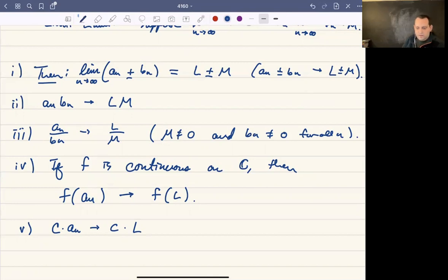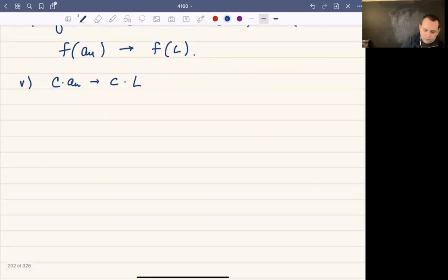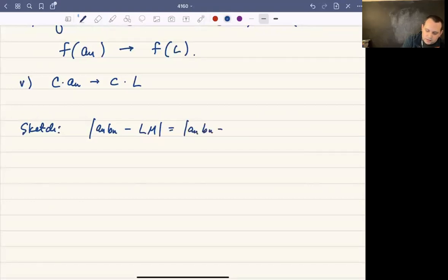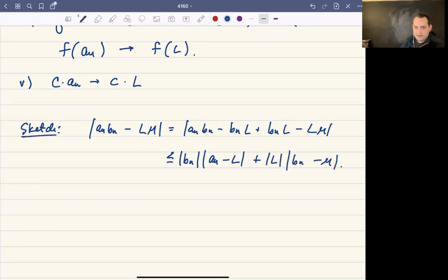Just to give you an idea for number two, this is just a sketch for number two: notice that |a_n·b_n - L·M| equals |a_n·b_n - b_n·L + b_n·L - L·M|. By the triangle inequality, this is less than or equal to |b_n|·|a_n - L| + |L|·|b_n - M|. That's a very quick sketch for number two, but that gives you the idea. You can add and subtract the right terms and apply the triangle inequality. You have to be a little bit careful.